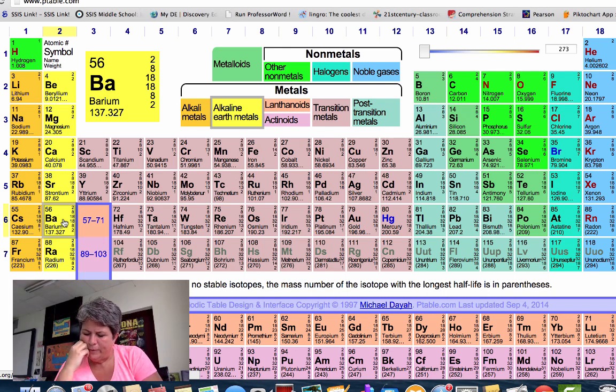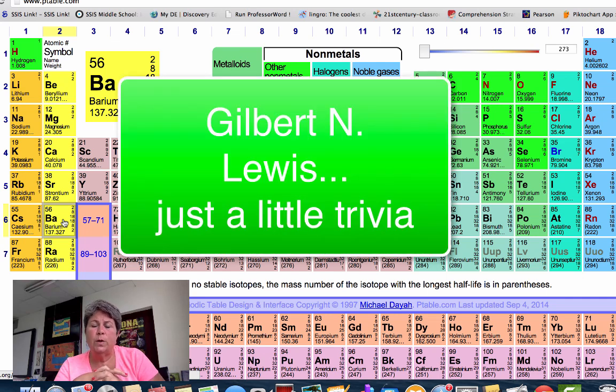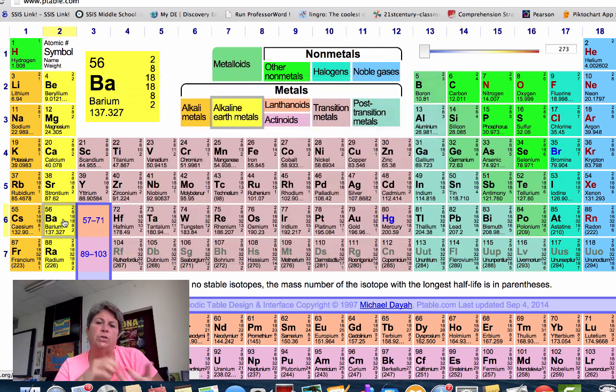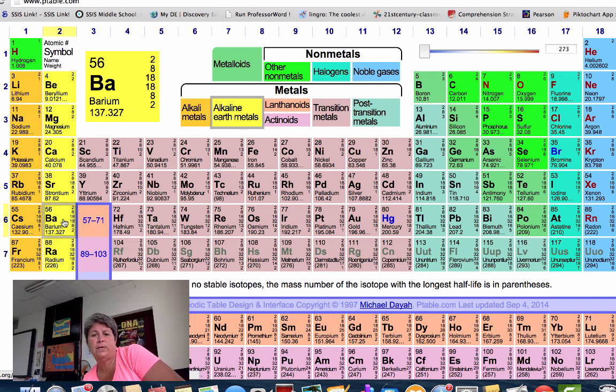So we've talked about stable and reactive. One thing that we're going to practice in class, especially when we start doing specifically ionic bonding and covalent bonding, is we will use what are called dot diagrams or Lewis dot diagrams. They're named after this scientist. These electron dot diagrams will help you because they allow you to focus on just the valence electrons and not worry about the other 54 electrons that barium has. We'll be doing some of those in class. If you had me for science last year, you've done some work with electron dot diagrams, so it won't be a completely new concept for you.